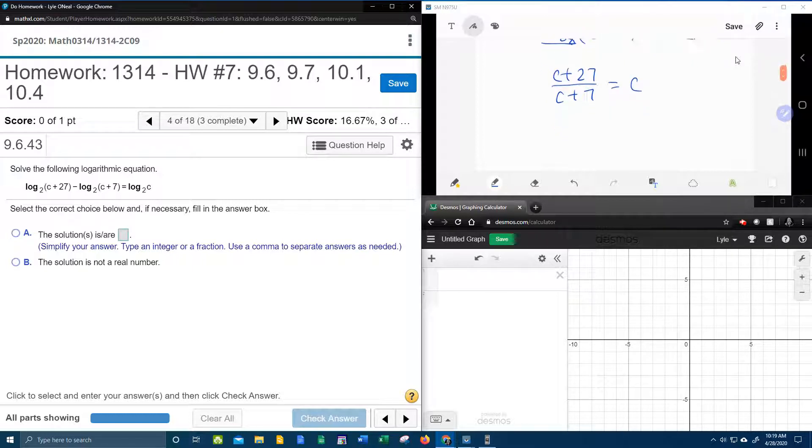And so that'll leave us with c plus 27 over c plus 7 equals c. And so now we have a rational equation that we need to solve for c. The way I'm going to do that is I'm going to take this c here by itself, I'm going to fraction it up, so that I'll have a proportion, and then I can cross multiply.